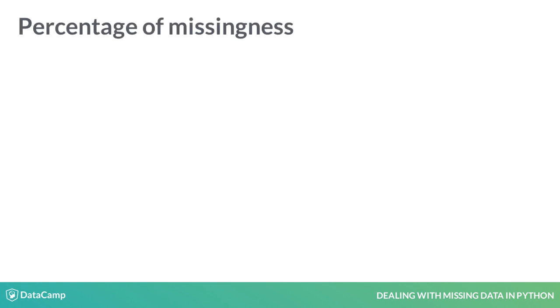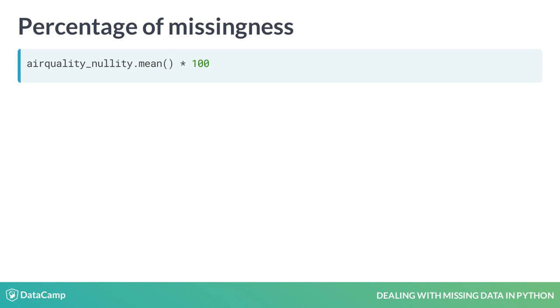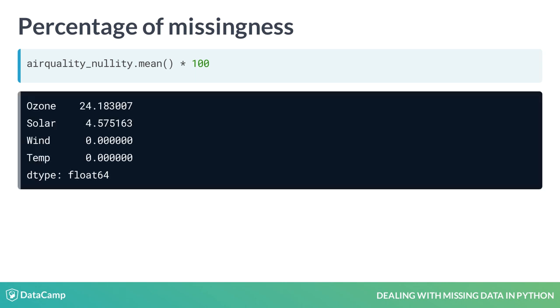Similarly, to find the percentage of missing values for a column, we can apply the method mean and multiply by 100 on the dataframe air_quality_nullity.